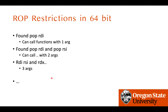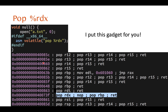We can easily find pop rdi and call one-argument functions, and we can also easily find pop rdi and pop rsi for two-argument functions. But to call a three-argument function like execve, we need to control rdi, rsi, and rdx simultaneously. The problem is that pop rdx does not appear much in typical programs.